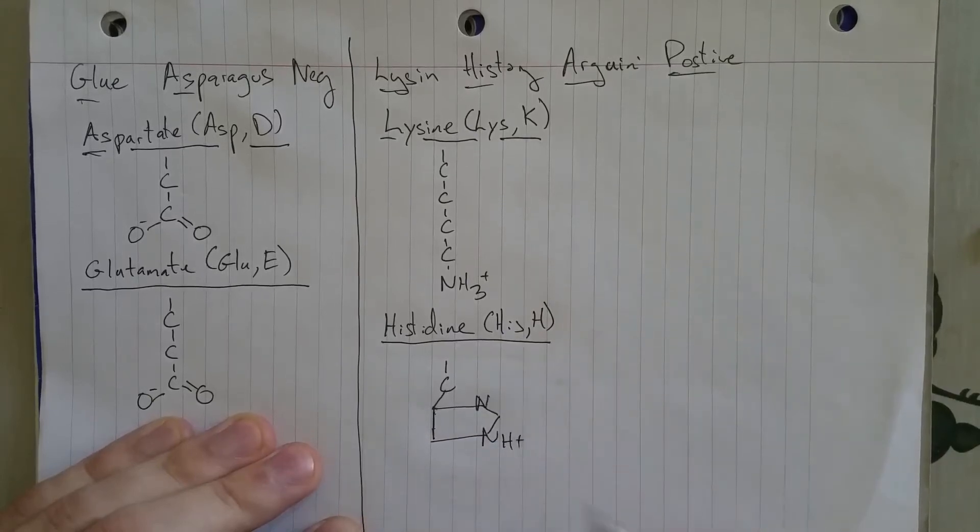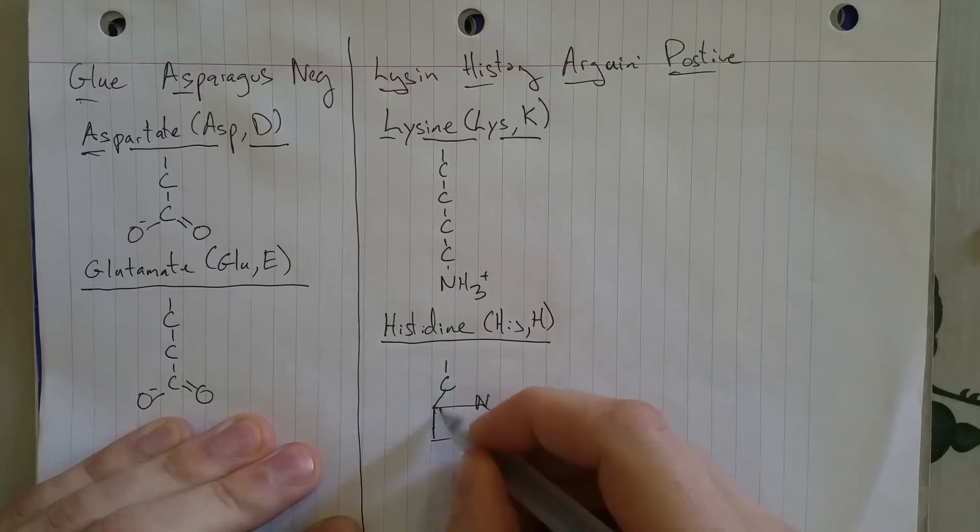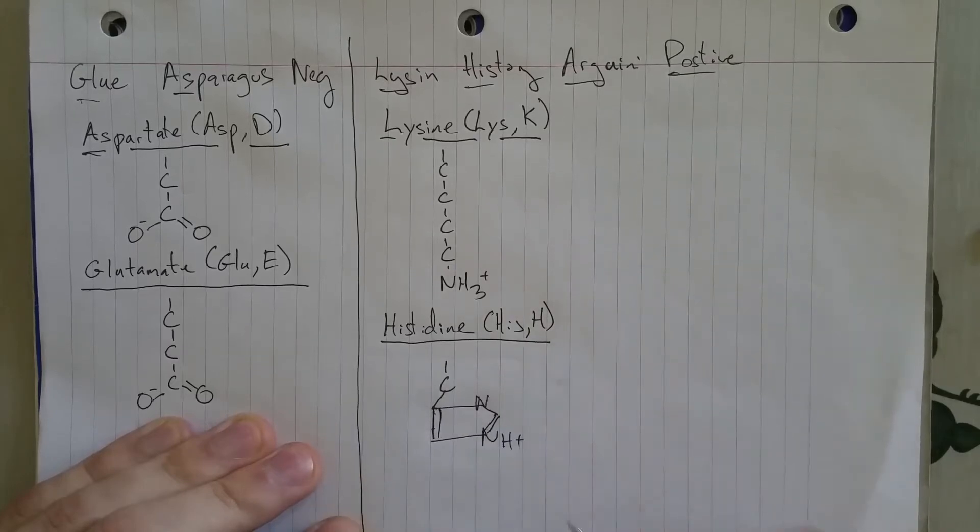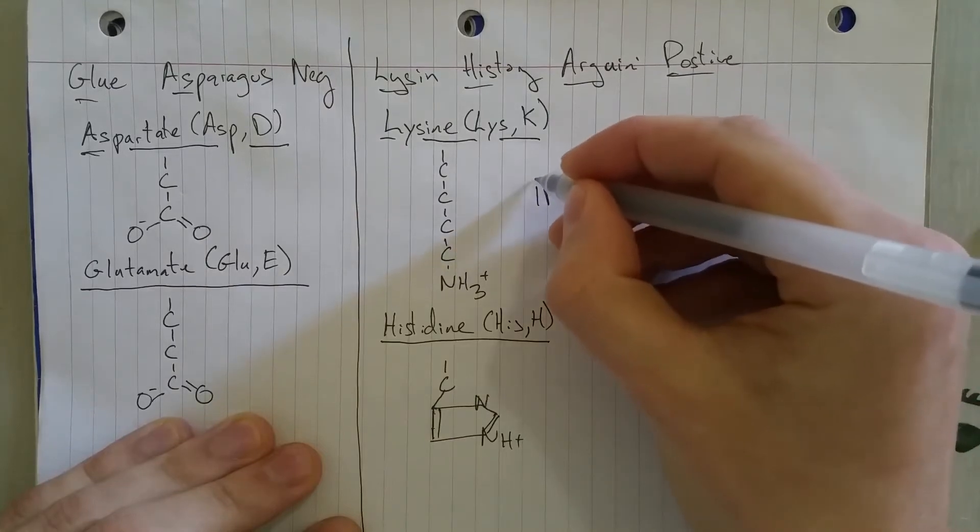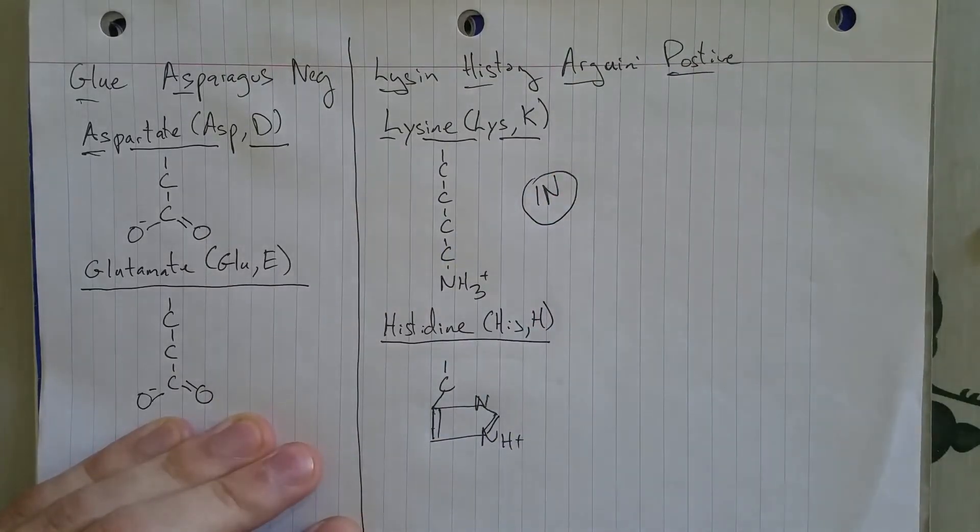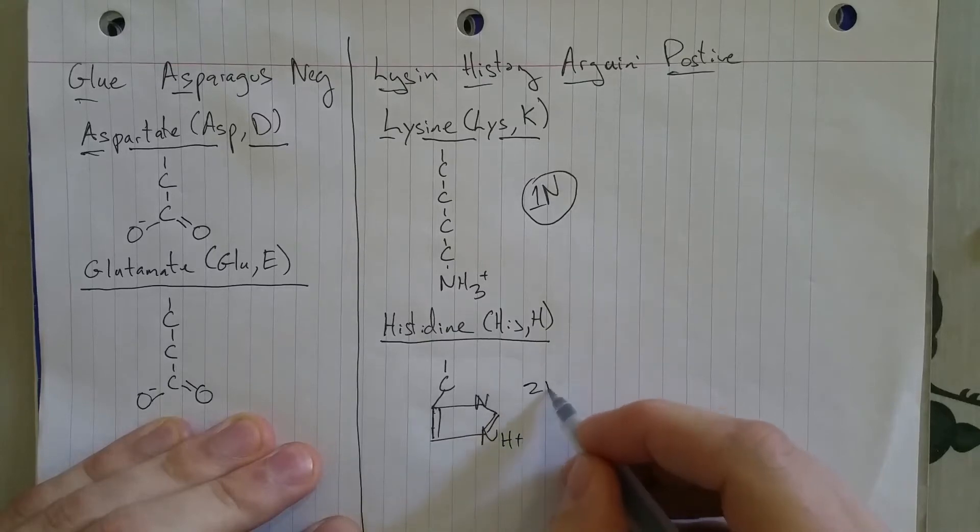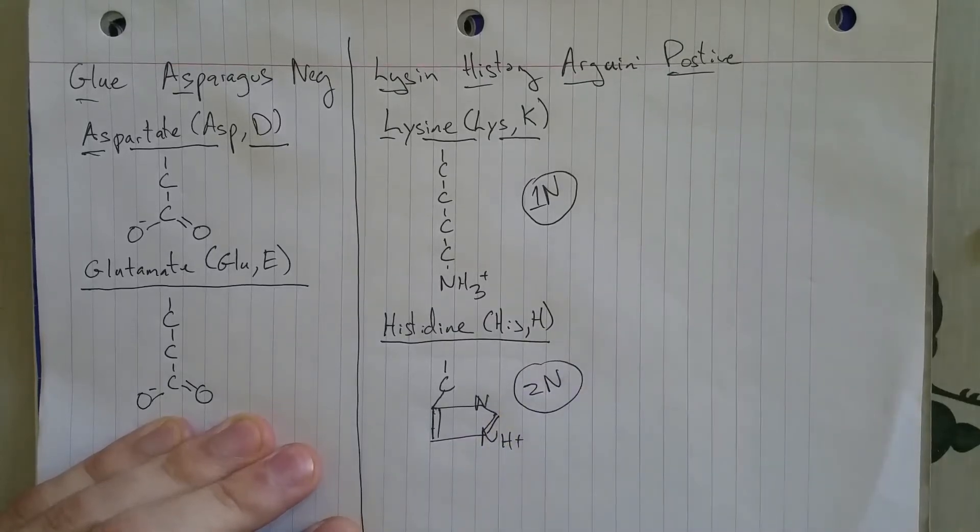And this house has two nitrogens on it. And you've got some double bonds. And the first side chain in our story had one N. The second side chain in our story has two N's.